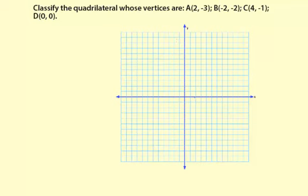So let's plot the points and see what we can do from there. So 2, -3, that's A. B is -2, -2. C is 4, -1. And D is 0, 0.